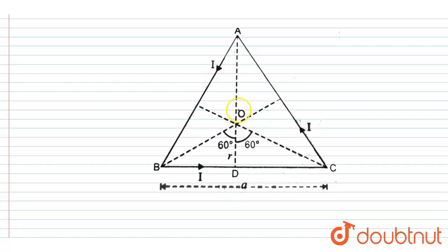of all the three wires - because of AB wire it will be up the plane, because of BC wire it is also up the plane, and CA it is also up the plane. So at this point, the magnetic field direction will be up the plane. So if you see this, this angle is 60